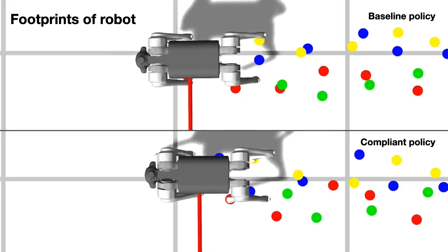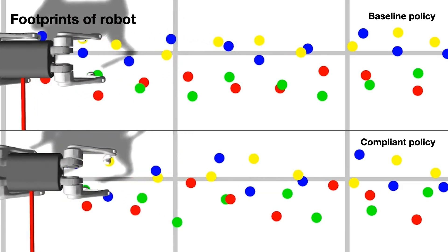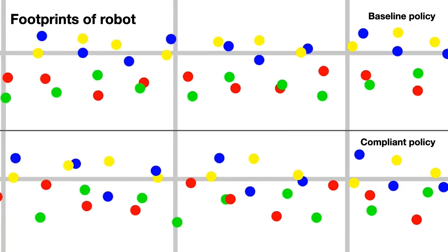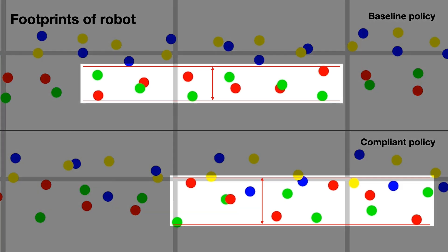As demonstrated in the video, the compliant policy exhibits more adaptive and compliant behaviors in response to external disturbances. Instead of resisting the forces directly, it tends to move in the direction of the applied forces, showing a more flexible and adaptive response.